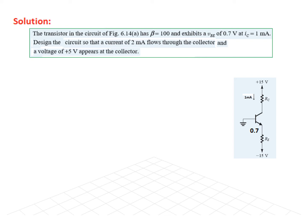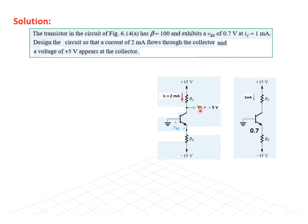The first scenario is IC = 1 milliampere and VBE = 0.7V. The second scenario is IC = 2 milliampere. We have to ensure the collector voltage VC is 5 volts, find the new value of VBE, and then find RE and RC.